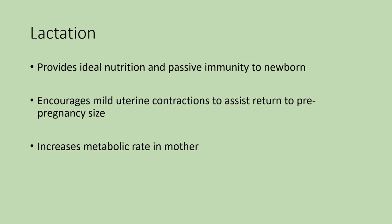In terms of lactation and producing milk: ideally breast milk provides the best nutrition. Not all women are able to breastfeed and that's okay. Breast milk does provide passive immunity to a newborn, because a newborn's immune system is not fully functioning — usually about three months. The mother can pass antibodies through breast milk to provide some protection. Lactation also helps stimulate mild uterine contractions, which helps return the uterus to its pre-pregnancy size, and it increases the mother's metabolic rate, helping her lose some of the fat reserves accumulated during pregnancy.